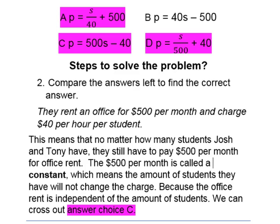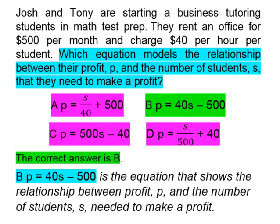On C it says P is equal to 500S minus 40. The $500 that Josh and Tony pay for renting that space is not determined by how many students they have — they can have one student or 150 students, they are still going to have to pay $500 per month for rent. That is considered a constant, an independent value not dependent on something else.